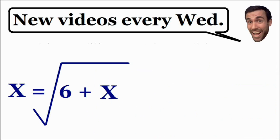And now we have a pretty simple equation that can be solved using basic algebra. So in order to get rid of the square root, I am going to square both sides of the equation. And now on the right side of the equation, the square and the square root cancel each other out, and we are left with 6 plus x.